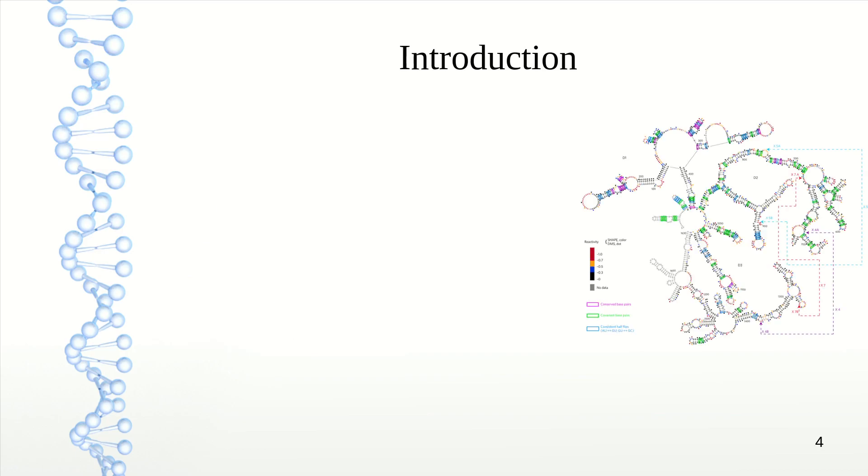First and foremost, a lot of non-coding RNAs do have a function. It depends on their secondary structure. As you can see on the right, I have an image of an RNA sequence that is folded up into lots of loops and pairs. It has a whole structure, and that structure can have a function.